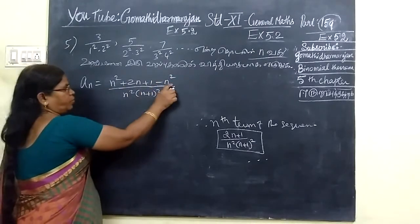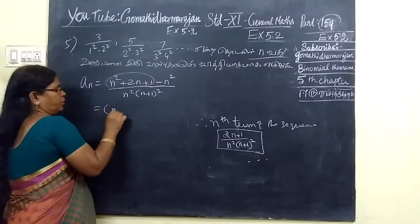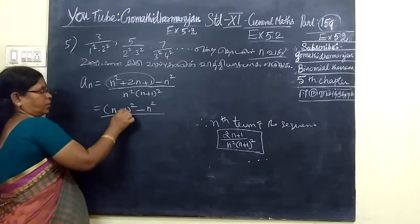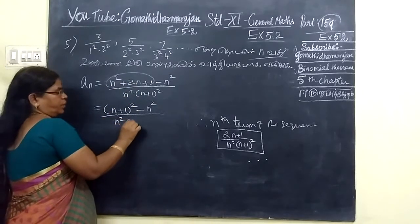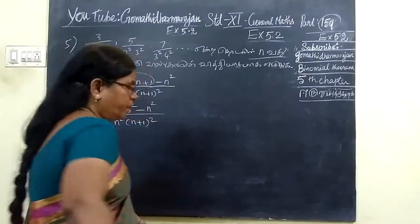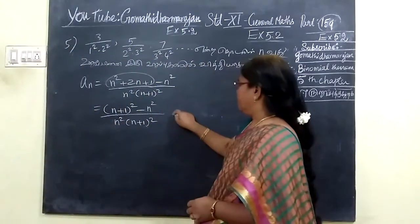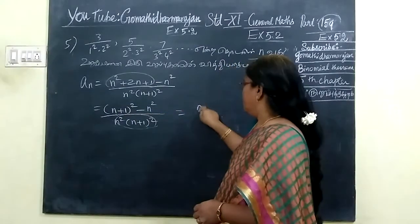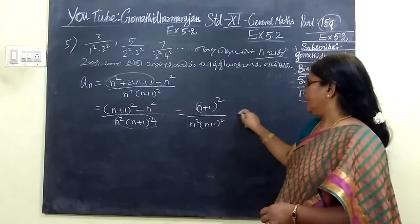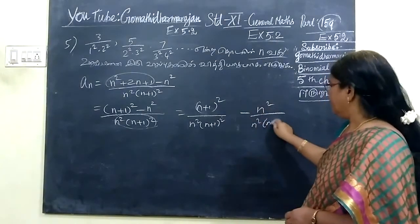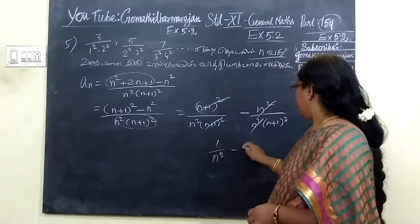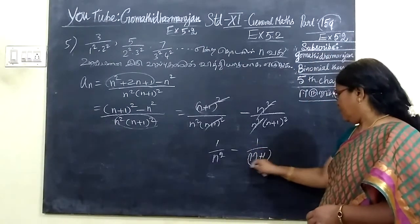The answer is in order. Both plus N square and minus N square — this is complete in the form of A plus B whole square. In this factor term, the overall term is: N plus 1 whole square by N square bracket N plus 1 whole square, minus N square by N square bracket N plus 1 whole square. So this simplifies to 1 by N square minus 1 by N plus 1 whole square.